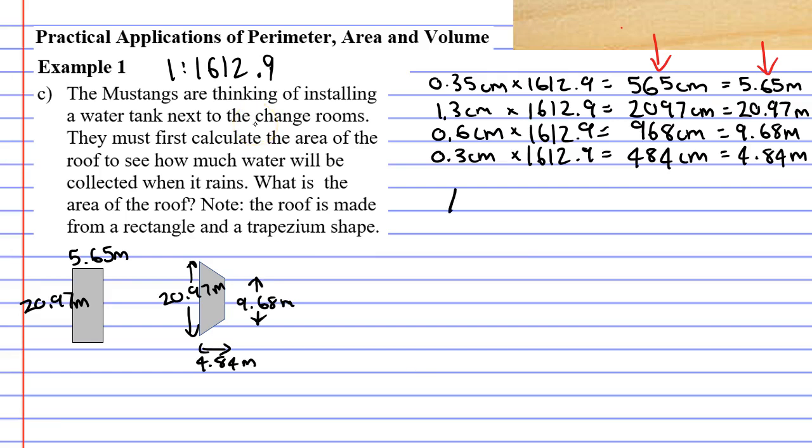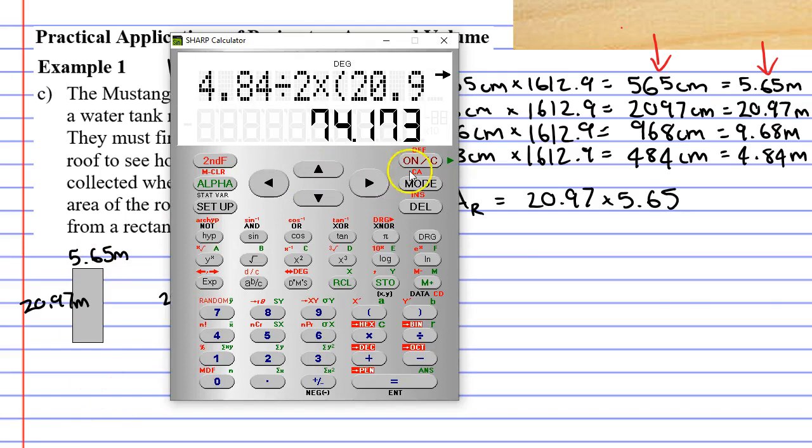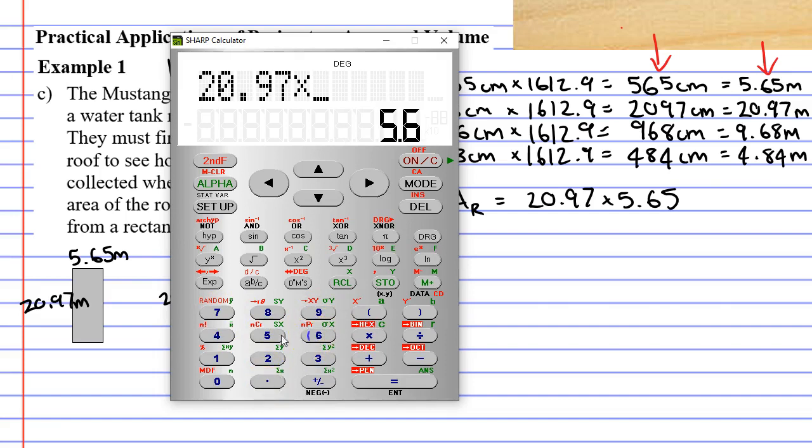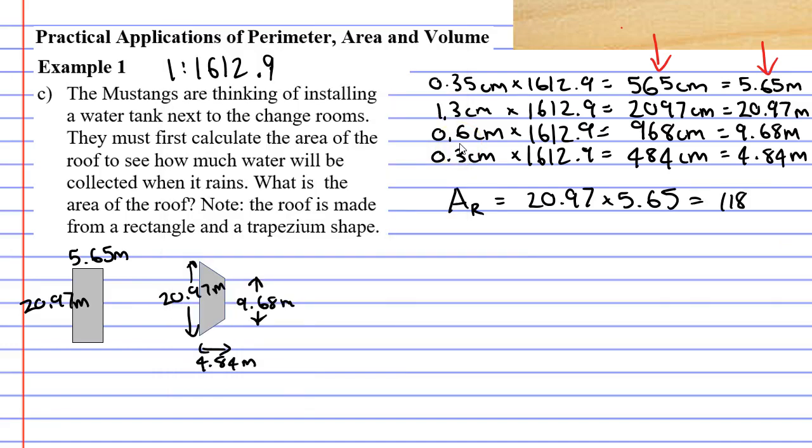We'll start by finding the area of the rectangle, using a subscript of capital R to show this is the rectangle. To find the area of the rectangle, we simply multiply the two sides: 20.97 times 5.65 equals, rounded to 118 metres squared.